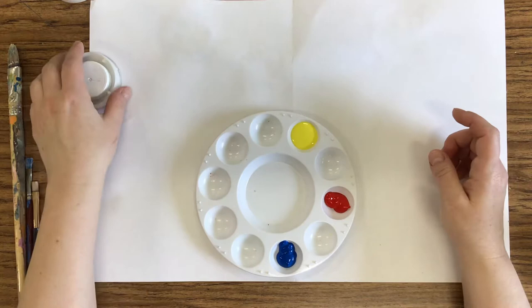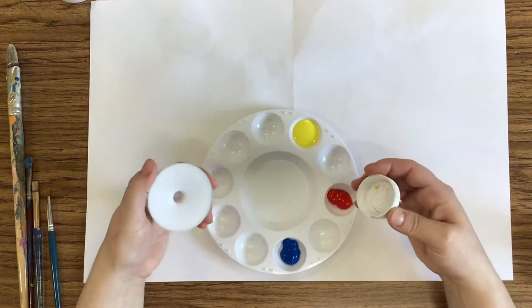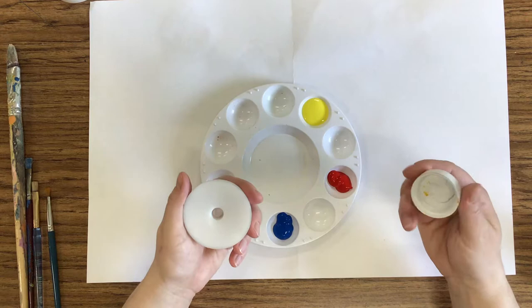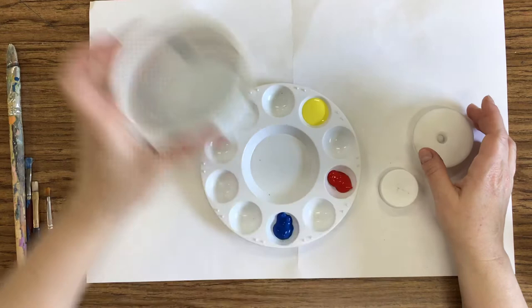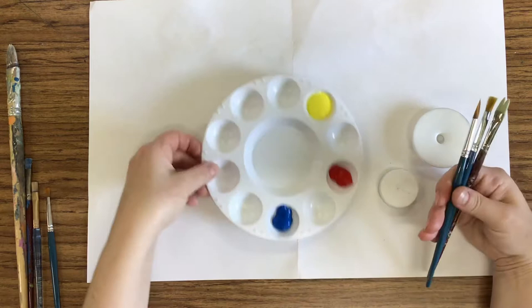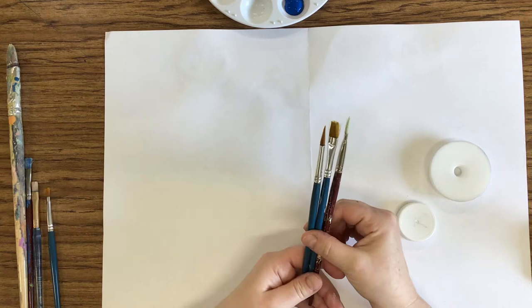You're also going to need to find something circular to trace—maybe not large, maybe a medium, and then a smaller circle. You're also going to need a cup of water and your paint brushes that you picked up when you were here.